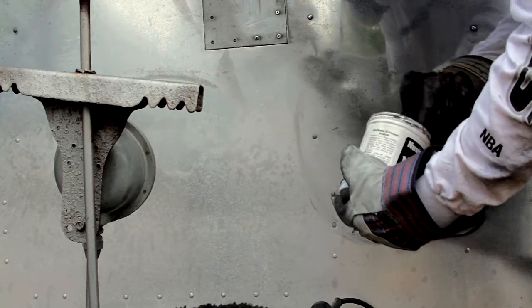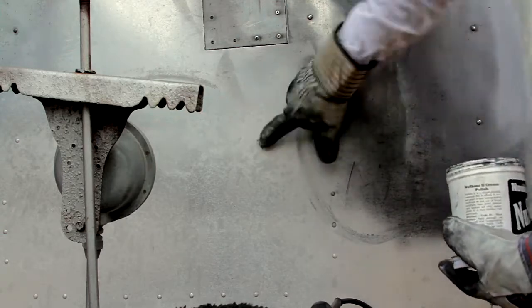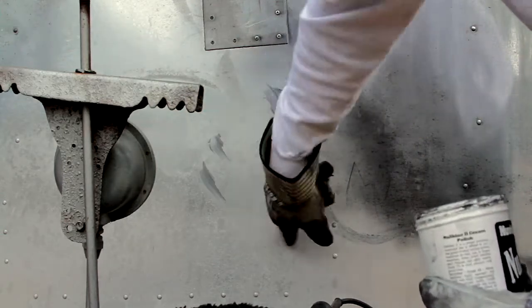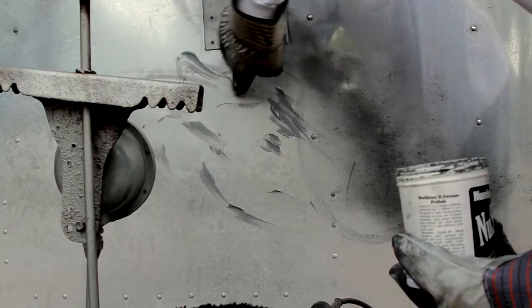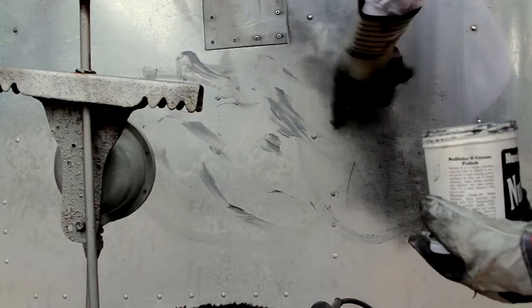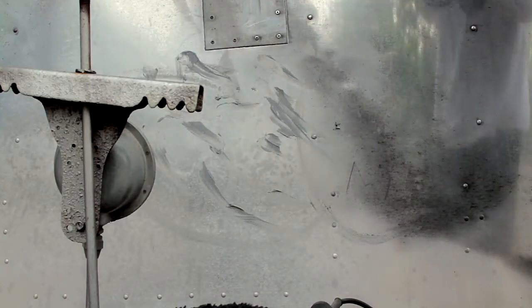So you just grab some on your finger. They say use a little - I don't know what a little is but I use this much and I just spread it everywhere that I'm going to be polishing. To the right you can see the polished surface, and I just spread it all over the corroded surface.